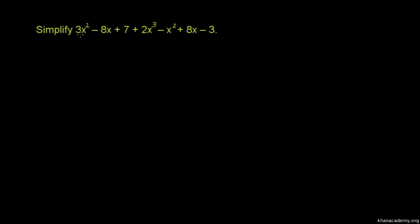This polynomial means 3x squared minus 8x plus 7 plus 2x cubed minus x squared plus 8x minus 3. This polynomial is called like terms. You like terms.